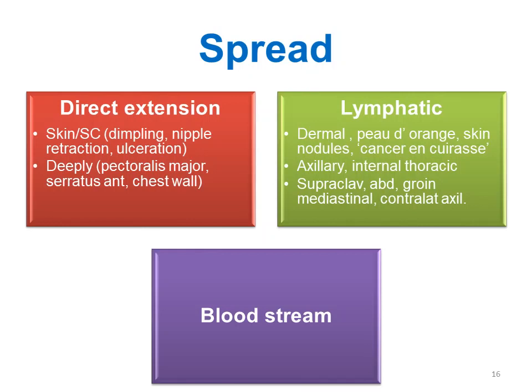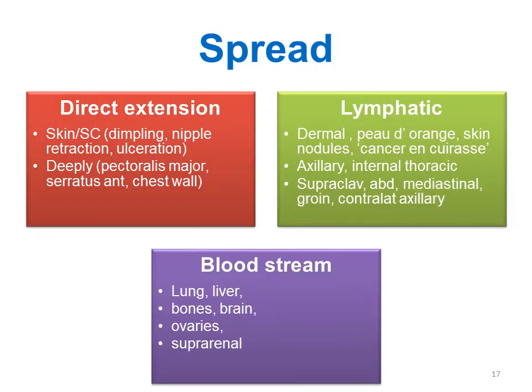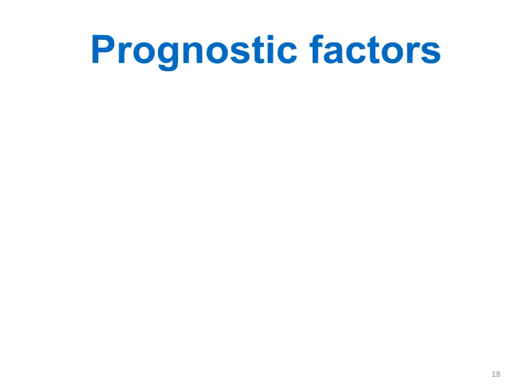Peau d'orange, skin nodules, and cancer en cuirasse may occur. Axillary lymph nodes may be affected as well. Internal mammary, supraclavicular lymph nodes, abdominal, groin, mediastinal, and contralateral axillary lymph nodes may all be involved through lymphatic spread. Through the bloodstream, spread goes to the lungs, liver, bones, brain, ovaries, or adrenal glands.